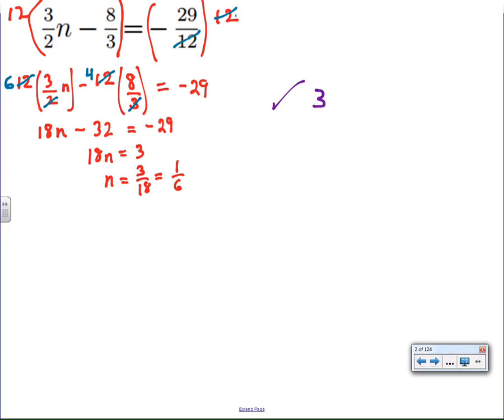We're going to add 32 to both sides and get 3. We're going to divide both sides by 18 and get that n is equal to 1/6. I better make sure I did my work right because I'm a little nervous about that fraction answer.